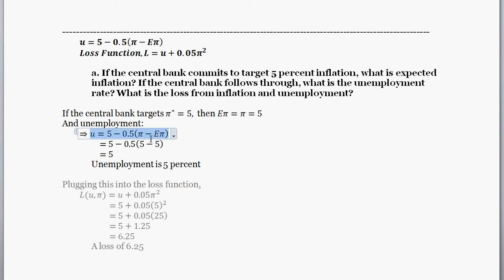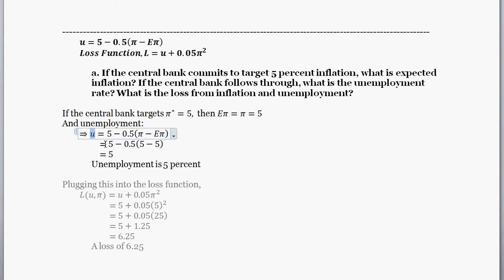Starting with the Phillips curve: actual inflation is five percent, and expected inflation — since people set their expectations in line with the central bank's target — is also five. So five minus five goes to zero, and the unemployment rate is going to be five percent.